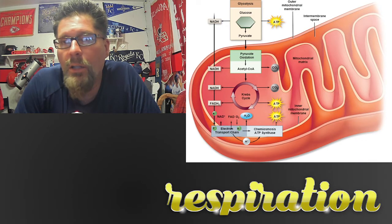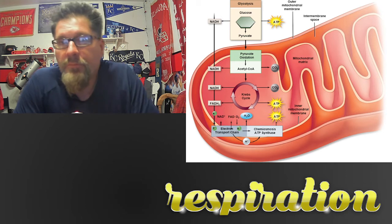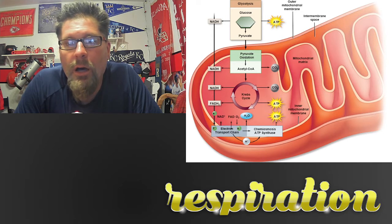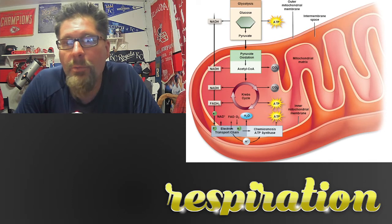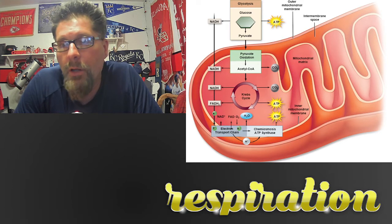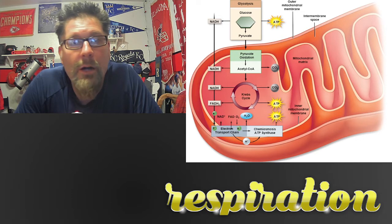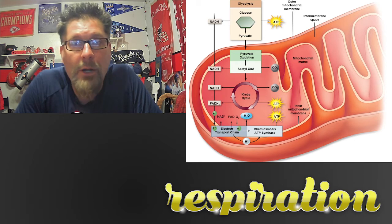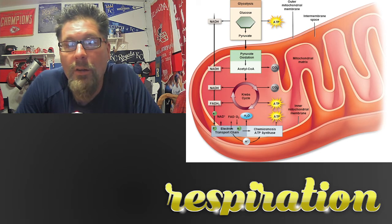What we're looking at here is the left side of a mitochondria, and you can see the locations of all the different steps of cellular respiration. As we go through each step, we get deeper and deeper into the mitochondria until we almost work our way across to the other side. These locations are important — they're certainly potential multiple choice questions. Glycolysis happens out in the cytoplasm of the cell.